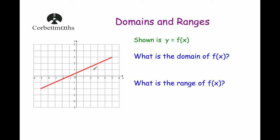Now the domain is those input values of x which have been placed into the function. So if we look at this, we've started at negative 5 and gone all the way up to and including 5. So we're going to write that down: the domain of f(x) is the values of x that are bigger than or equal to negative 5, but less than or equal to 5. So the domain of a function is just the values that are placed into the function.